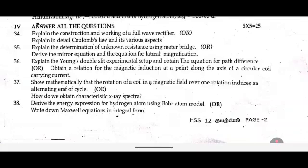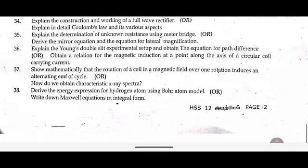Or obtain an expression for the magnetic induction at a point along the axis of a circular coil carrying current. Thirty-seven: Show mathematically that the rotation of a coil in a magnetic field over one rotation produces an alternating EMF of one cycle, or how do we obtain characteristic X-ray spectra. Thirty-eight: Derive the energy expression for a hydrogen atom using Bohr's atomic model, or write down Maxwell's equations in integral form.